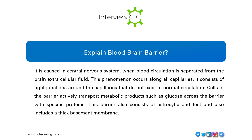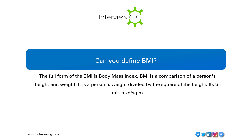The blood-brain barrier occurs in the central nervous system when blood circulation is separated from the brain's extracellular fluid. This phenomenon occurs along all capillaries and consists of tight junctions around the capillaries that do not exist in normal circulation. Cells of the barrier actively transport metabolic products such as glucose across it using specific proteins, and it also includes astrocytic end-feet and a thick basement membrane.